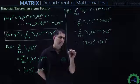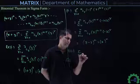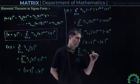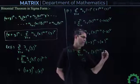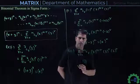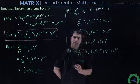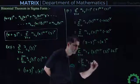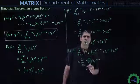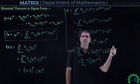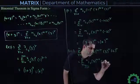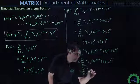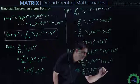Now let's discuss one more example: Σ (R=0 to N) NCR · 7^(N-R) · 3^R · (-2)^R. Here, one thing is clear — the powers of 3^R and (-2)^R are the same, so we can multiply them: 3 · (-2) = -6. So this becomes Σ (R=0 to N) NCR · 7^(N-R) · (-6)^R. Now this is converted to standard form.